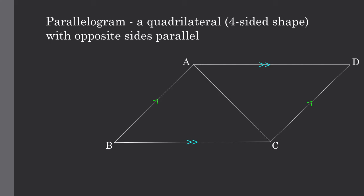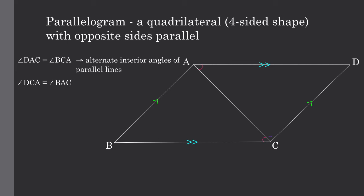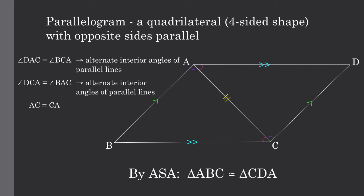To prove this, we are going to draw a line from A to C. We know that angle DAC equals angle BCA because of alternate interior angles of parallel lines. Next, we know that angle DCA will equal angle BAC for the same reason. And lastly, AC equals CA. So by angle-side-angle congruency, triangle ABC is congruent to triangle CDA. Thus, side AD must equal side BC, side DC equals side AB, and angle D equals angle B, showing that opposite sides are equal as well as opposite angles on a parallelogram.